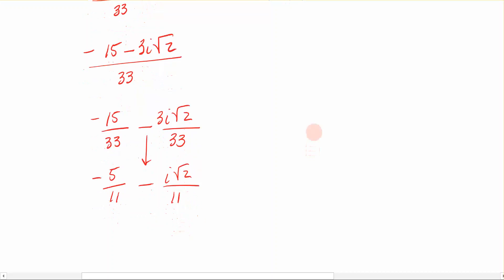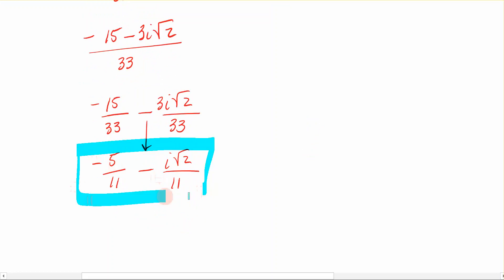Now that is one form of my answer: negative 5 elevenths minus i square root of 2 over 11. Another form of my answer is to write these two fractions as a single fraction. So my numerator, remember what happens when we add and subtract fractions? We add or subtract the numerators, so I would have negative 5 minus i square root of 2 all over the same denominator of 11. Both answers are acceptable. It doesn't make any difference which answer you put in, and just understand that either one will be acceptable.